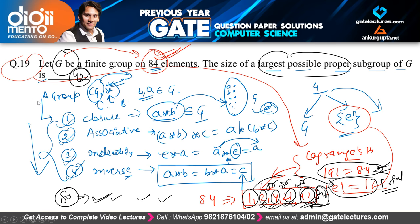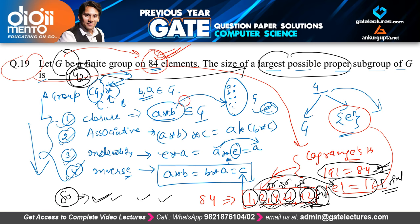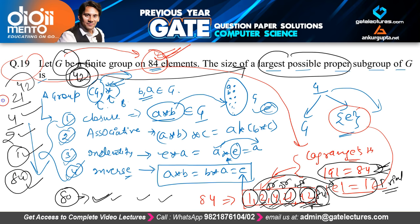Note that while 42 is the largest possible size, Lagrange's theorem does not guarantee that a subgroup of size 42 actually exists — it only says that if a subgroup exists its size must divide 84. Subgroups of sizes 21, 4, and 2 are also possible, and size 1 (trivial) always exists.